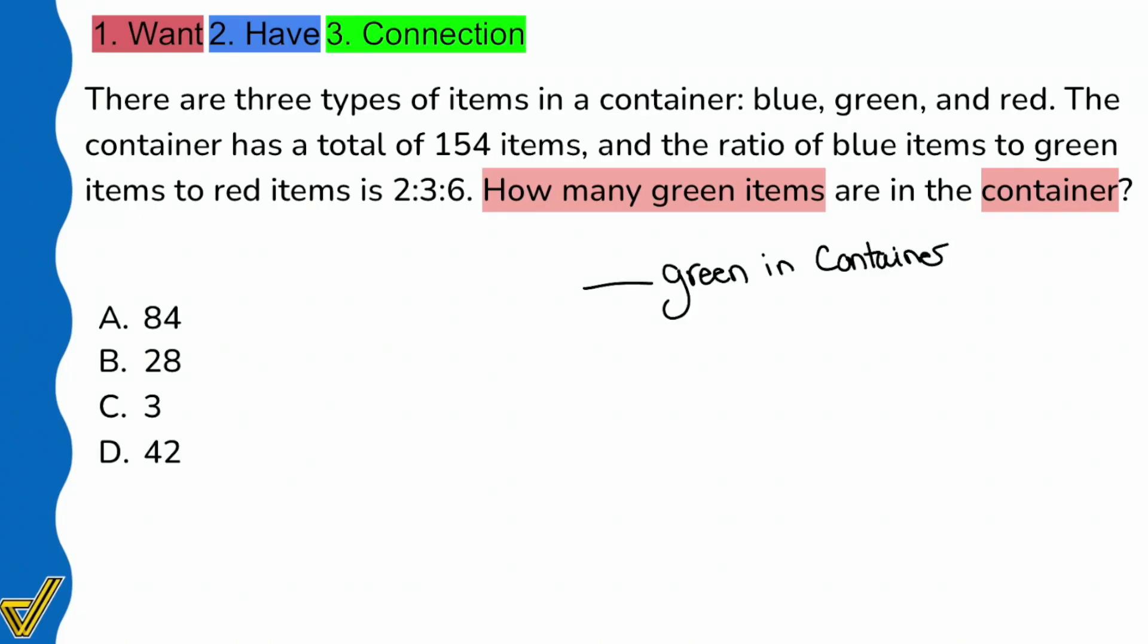There are three types of items in a container: blue, green, and red. Immediately I see that we're making a comparison because we have blue, green, red, how many green, and I already noticed this triple ratio. So let's write blue, green, and red.